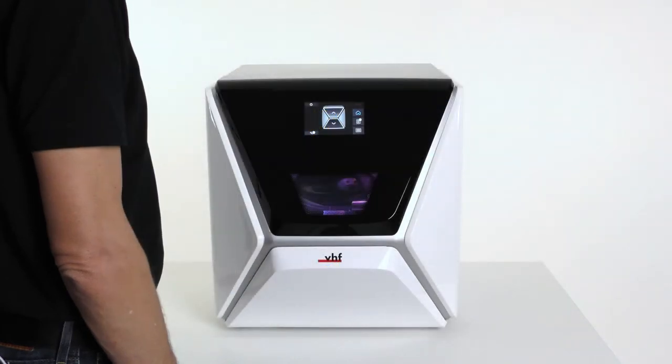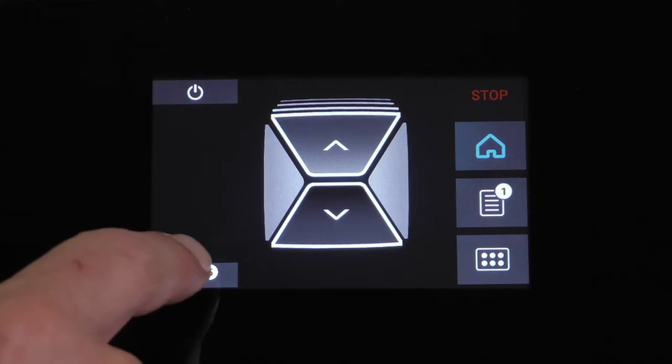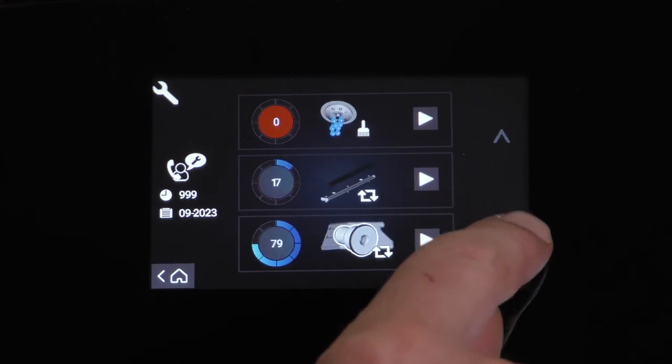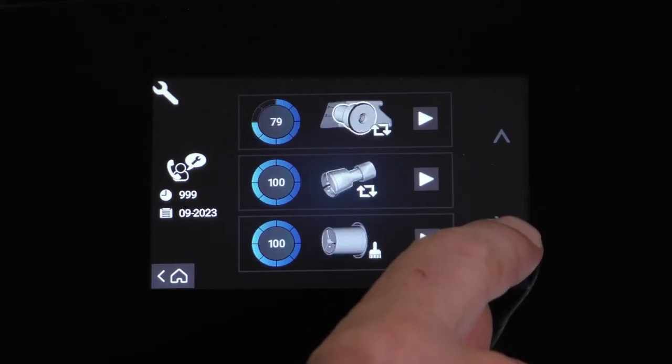Select the wrench symbol on the touch screen to access the maintenance section. Navigate through the menu with the arrows on the right side. Select cleaning the blank holder collet chuck.